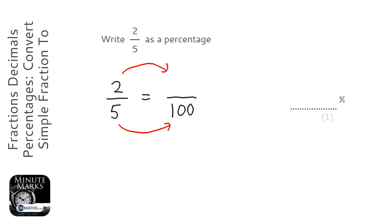We've got to think, how do I get from 5 to 100? Well, what's 100 divided by 5? That's 20. So I'm going to multiply by 20.